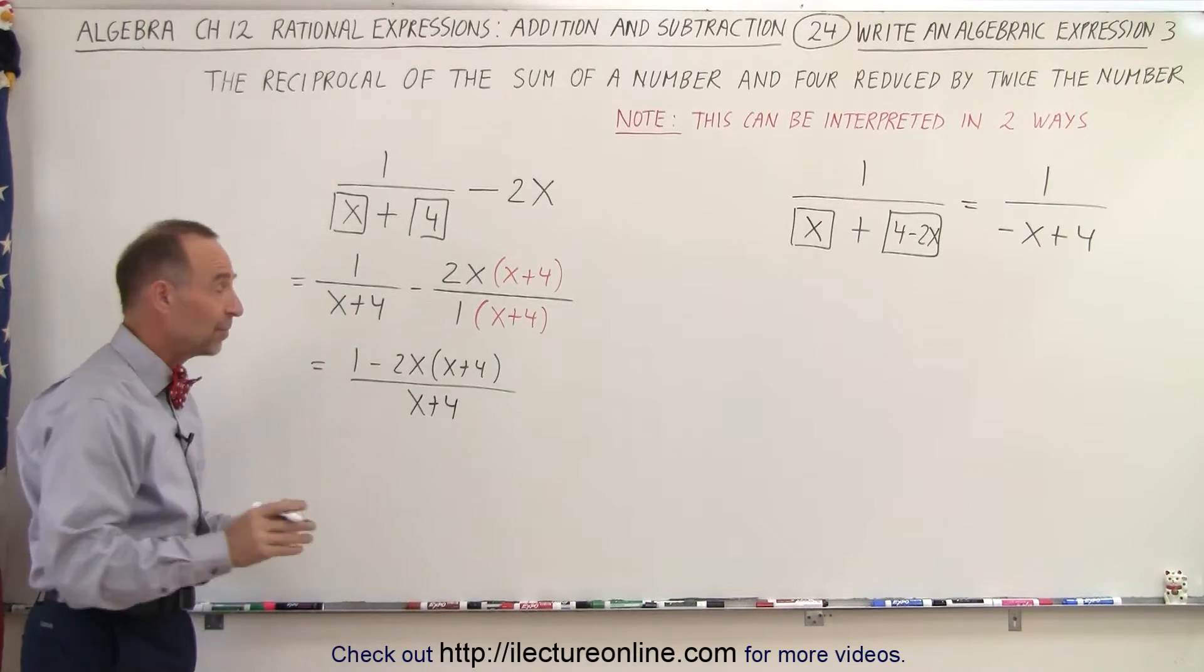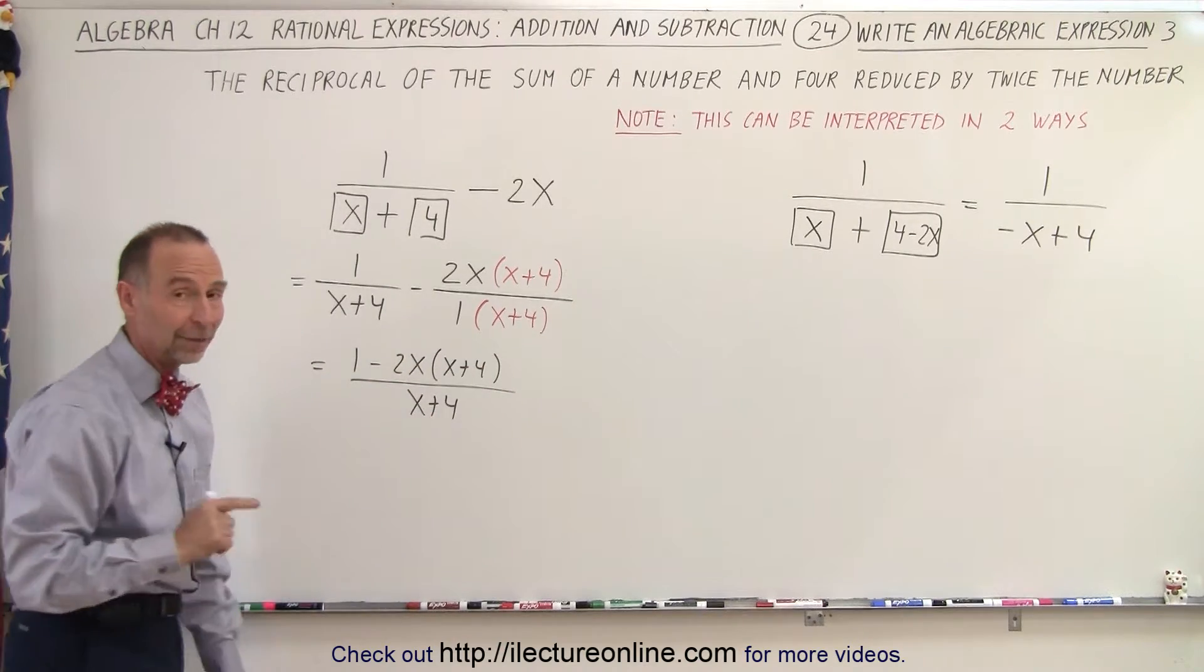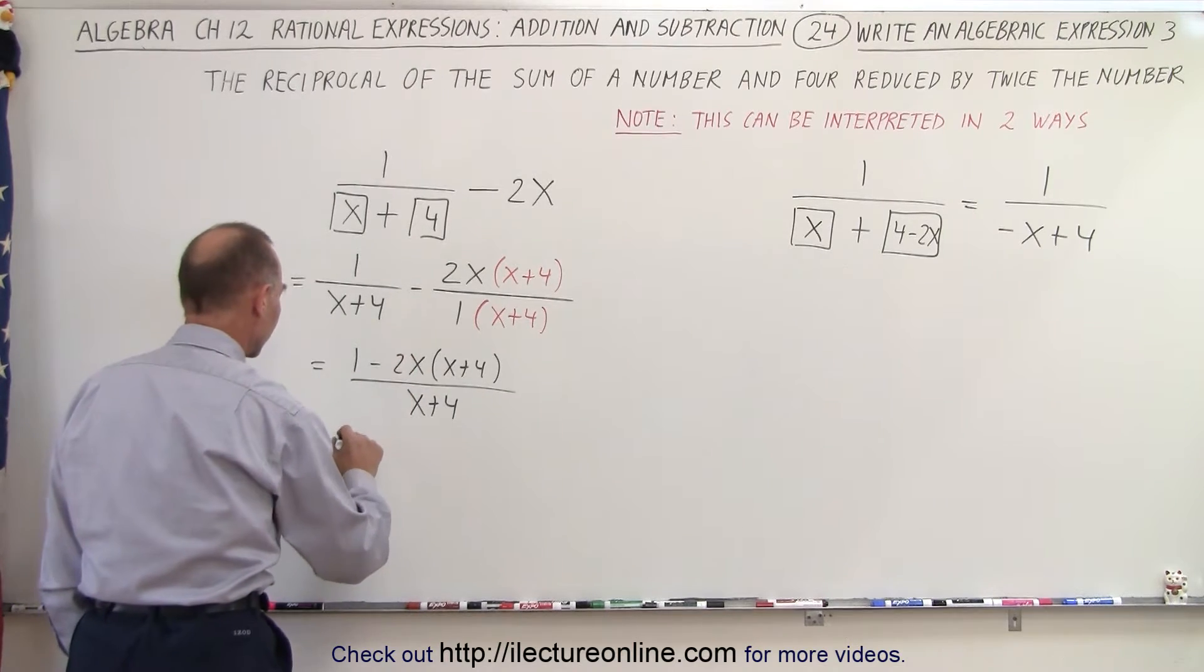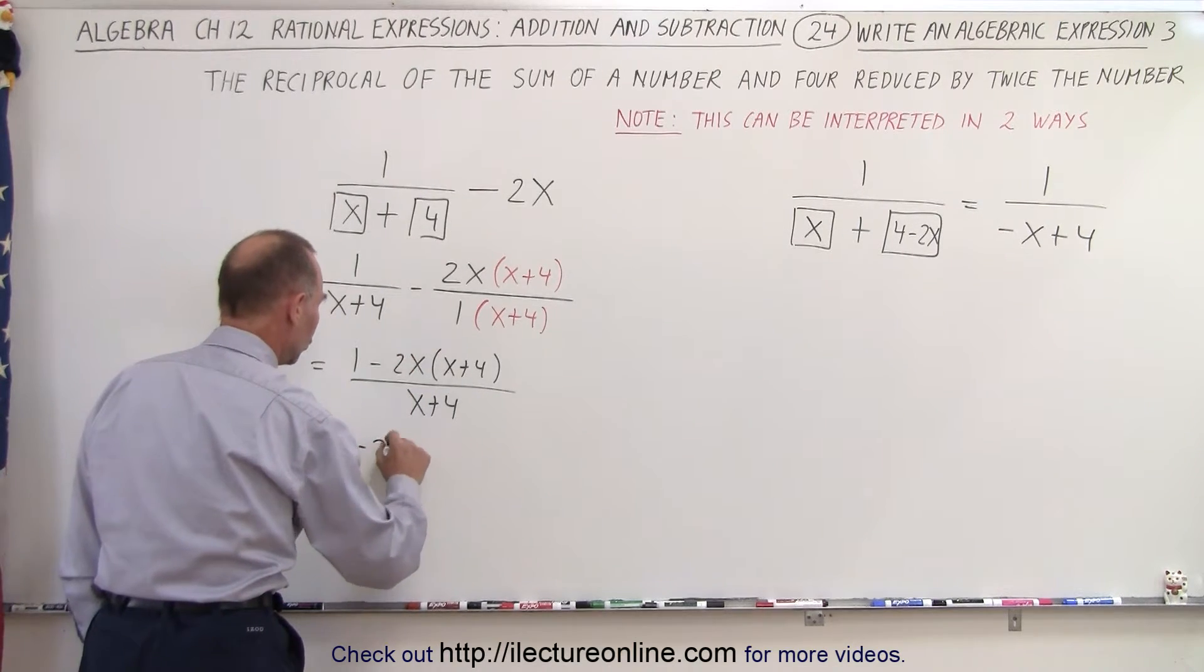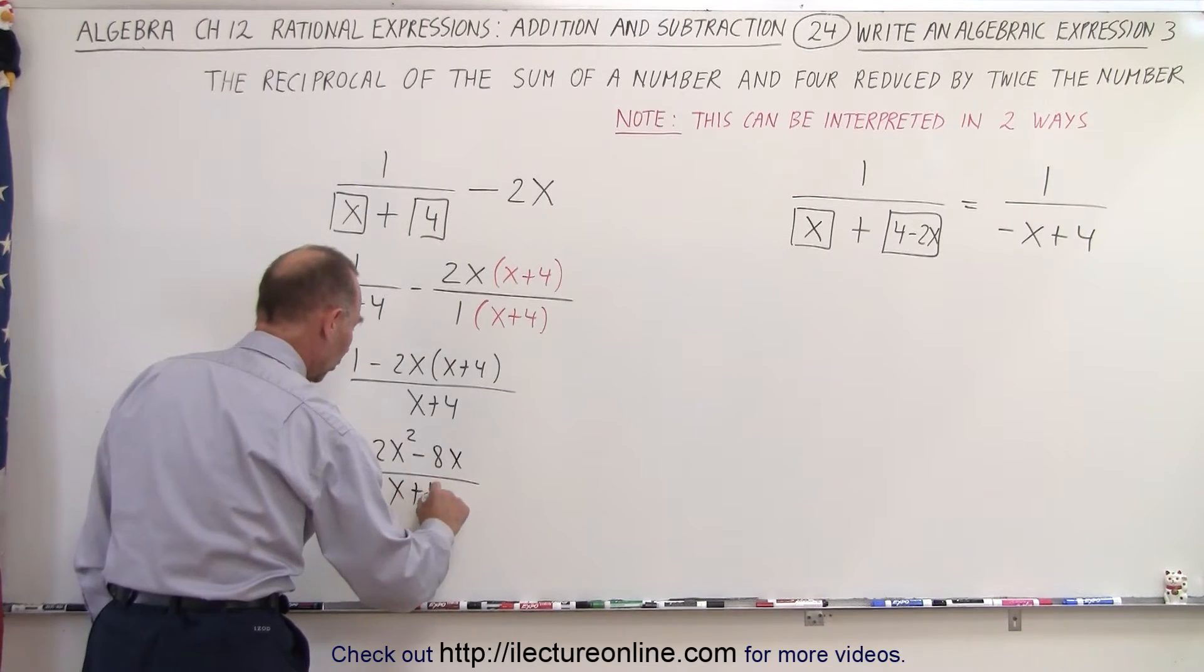And of course resist the temptation to try and eliminate the x plus 4s because you're not allowed to do that because of the negative sign here. But multiplying everything through in the numerator this gives us 1 minus 2x squared minus 8x all over x plus 4.